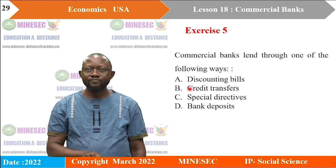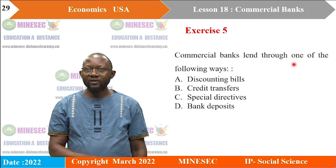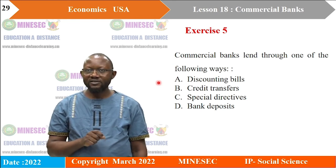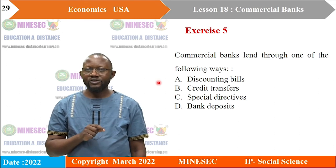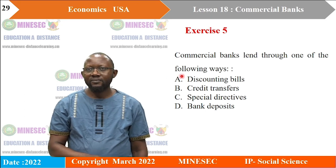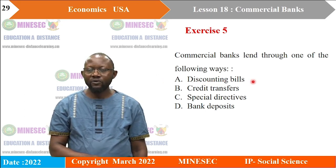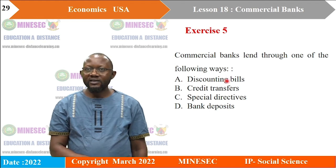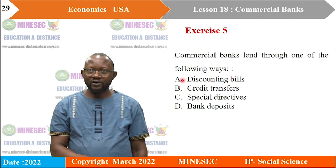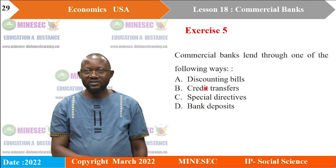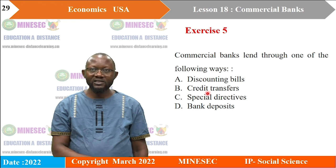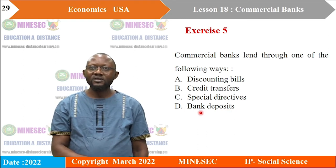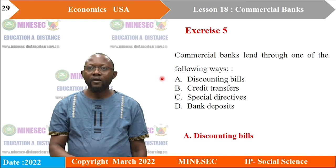Exercise 5: Commercial banks lend through one of the following: A. discounting bills, B. credit transfers, C. special directives, D. bank deposits. Credit transfers are a method of acting as agent of payment; special directives are a monetary policy tool; bank deposits is a distraction. Discounting bills — paying an amount less than the full face value — is a lending method. The correct answer is A.